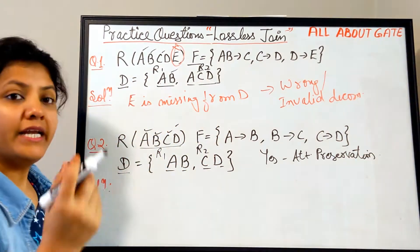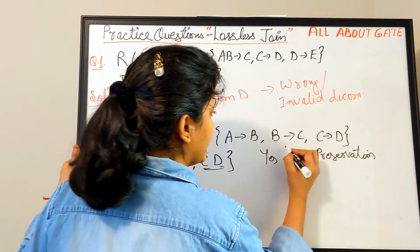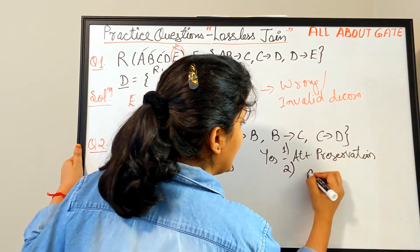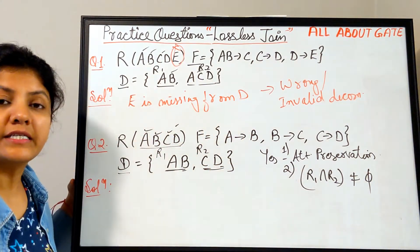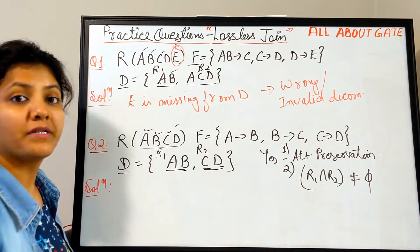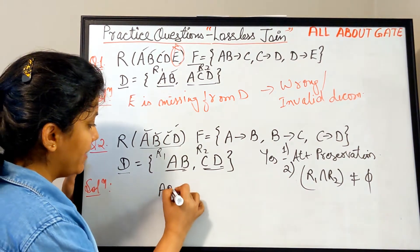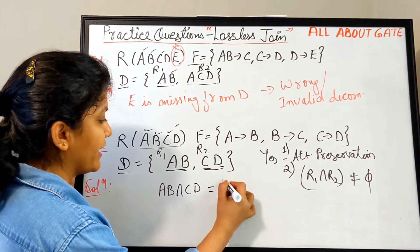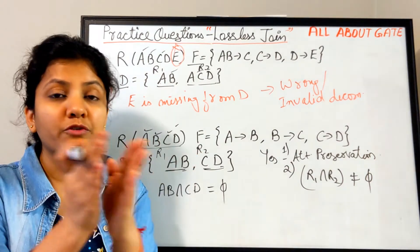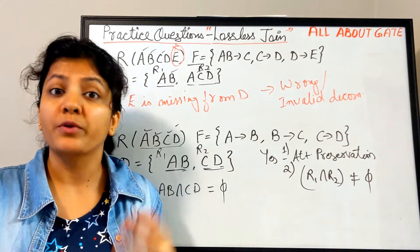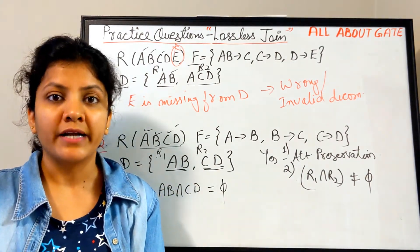Now the second condition: R1 ∩ R2 should not be equal to the empty set. We check whether AB ∩ CD equals the empty set. Yes, it is equal to the empty set. If it is empty, there is no common attribute, and you cannot join them — to make a join you need some attribute in common between them.